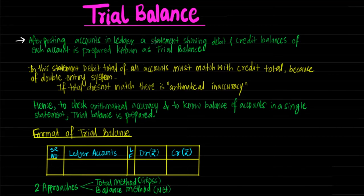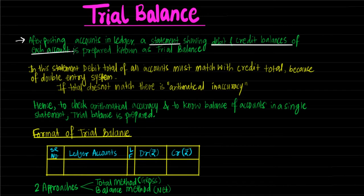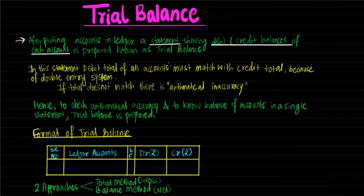After posting accounts in ledger, a statement showing debit and credit balances of each account is prepared, known as trial balance. In the previous tutorial we opened Hari's account, Ravi's account, and other accounts like cash, bank, purchases, sales, purchase returns, etc. Trial balance shows all accounts one after another, with all debit and credit balances shown in that statement. It is a statement, not an account. In this statement the debit total of all accounts must match the credit total because of the double entry system.